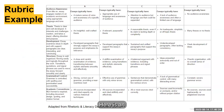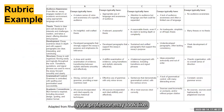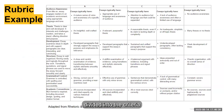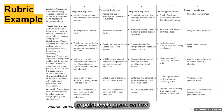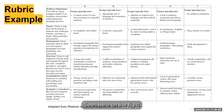Here is an example of what a rubric from your professor may look like. Rubrics are often divided into the criteria used for grading, seen here on the left, and then the different grade or point levels based on how well that criteria was met, seen here on the right.